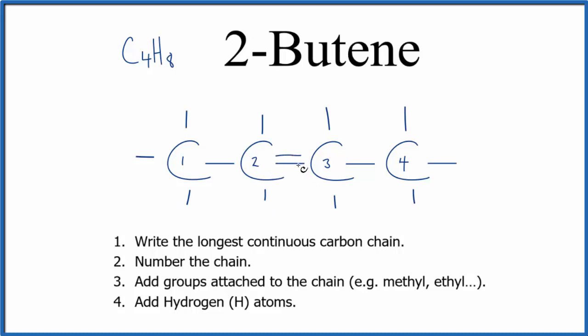Each carbon can only be bonded to four things. Right now we have one, two, three, four, five bonds. Same for this carbon. So let's get rid of these bonds, one here and one here. Note that these bonds are going to hydrogen atoms.